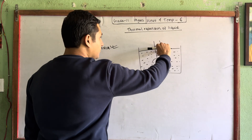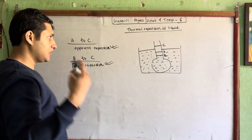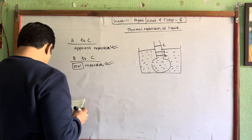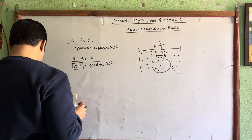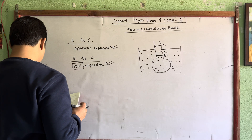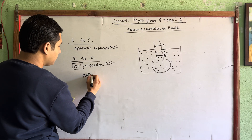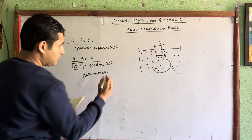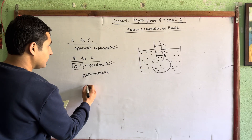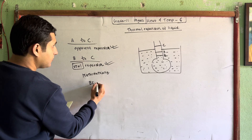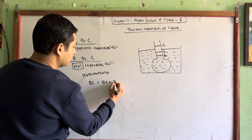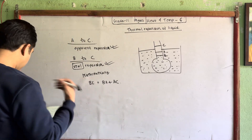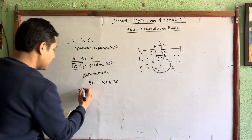So, if you learn math, you can learn the apparent expansion. Apparent expansion is good. Real expansion — expanded. Now we have mathematics. If you learn AC, then BC, then BA plus SE. BC means real expansion. AC means apparent expansion.